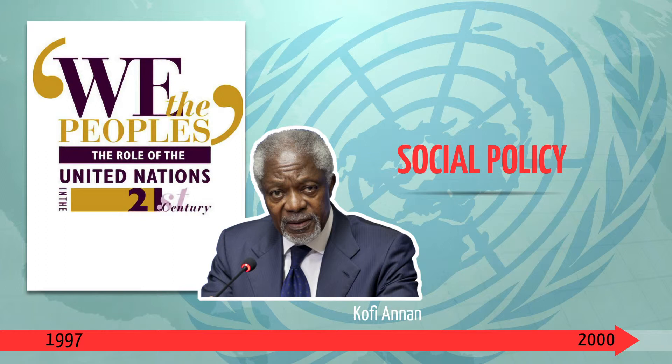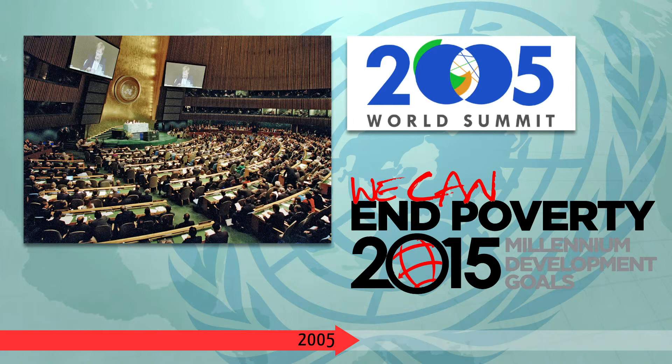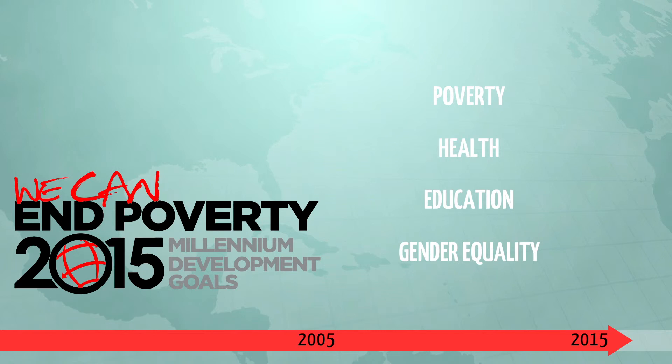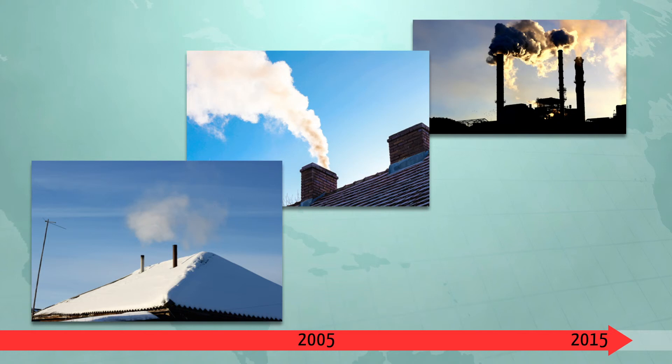This report has given rise to more alignment of countries when it comes to social policy. In 2005, the World Summit was finally held, and 189 countries began working on the Millennium Development Goals. Since then, more countries have formulated concrete policies in areas such as poverty, health, education, and gender equality. In different areas, there is progress made in the last ten years. For example, the percentage of people having less than $2 a day decreased by 39%, and child mortality is 15% lower.